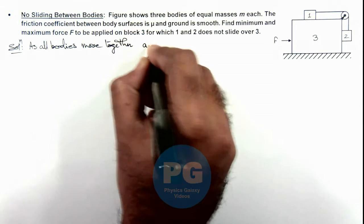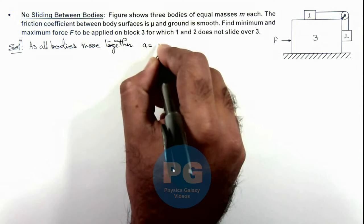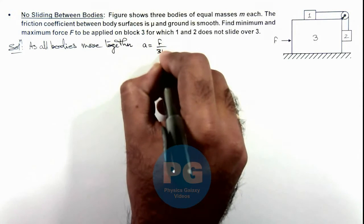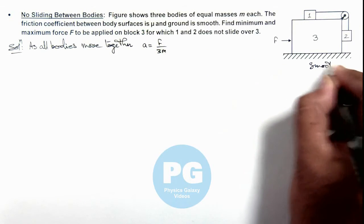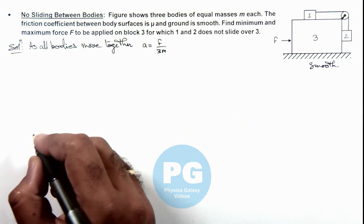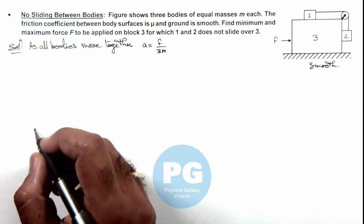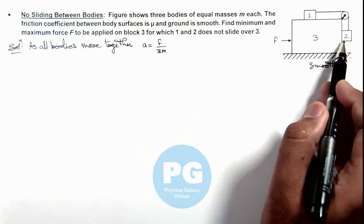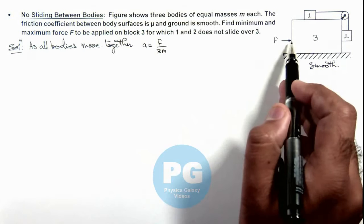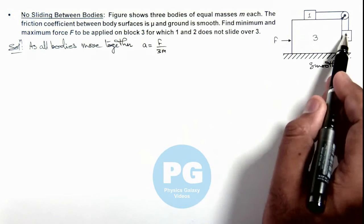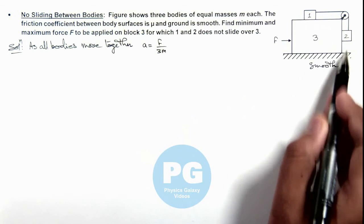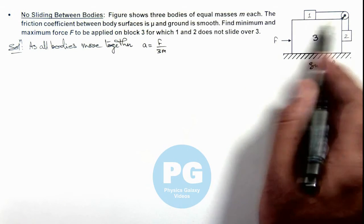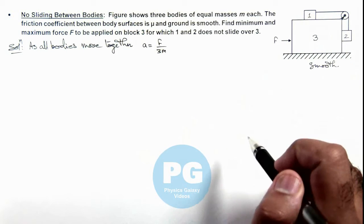The acceleration of the system can be written as F divided by 3m, since the ground is smooth. Now if we draw the free body diagrams of blocks 1 and 2 for the minimum value of force, blocks 1 and 2 have sliding tendency such that 2 will tend to move down and 1 has a tendency to move toward the right.